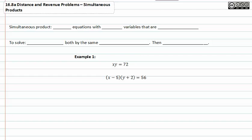In this section, we will be using simultaneous products to solve many of the problems. Because of this, we need to know what a simultaneous product does. A simultaneous product has two equations with two variables that are multiplied.